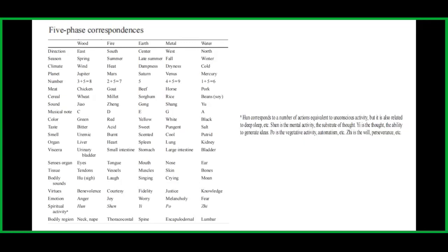For water: direction is north, season is winter, climate is cold, planet is Mercury, number is 1+5=6, meat is pork, cereal is beans or soy, sound is yu, musical note is A, color is black, taste is salt, smell is putrid, organ is kidney, viscera is bladder, sense organ is ear, tissue is bones, bodily sound is moaning, virtue is knowledge, emotion is fear, spiritual activity is Zhi, and bodily region is the lumbar area.